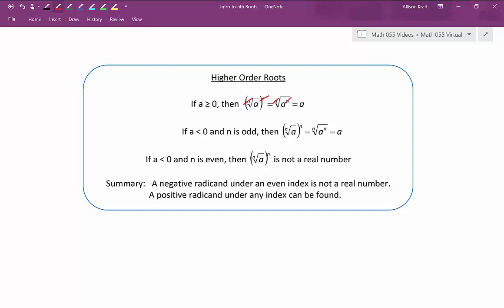If your radicand is less than 0, a negative number, that's where we have to be more careful. So if a is less than 0 and n is an odd number, then it's true that our radical and our exponent are going to cancel out and leave us with whatever the number is underneath the radical. However, if a is less than 0, a negative number, and our index is even, then the nth root of a to the n is not a real number.